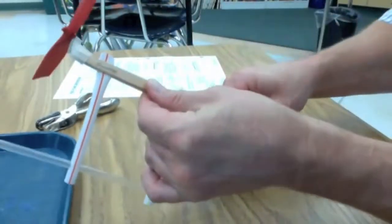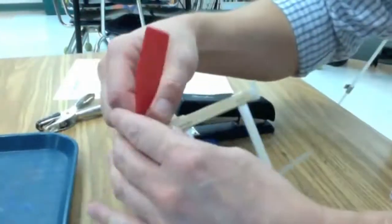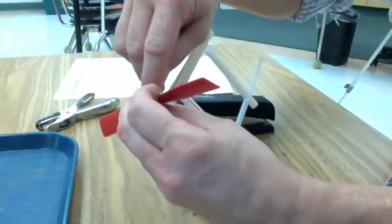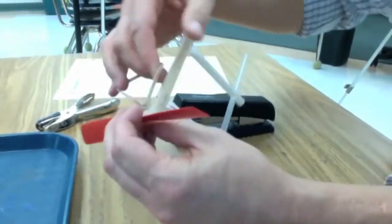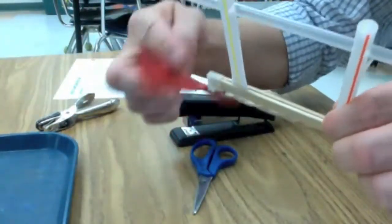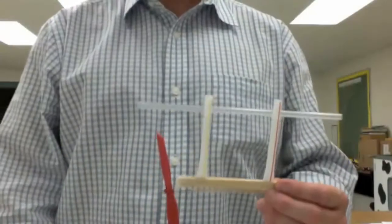Use scissors and trim the straws so they are smooth and even with the bottom of the popsicle sticks. Attach your rubber band, and you're set to go.